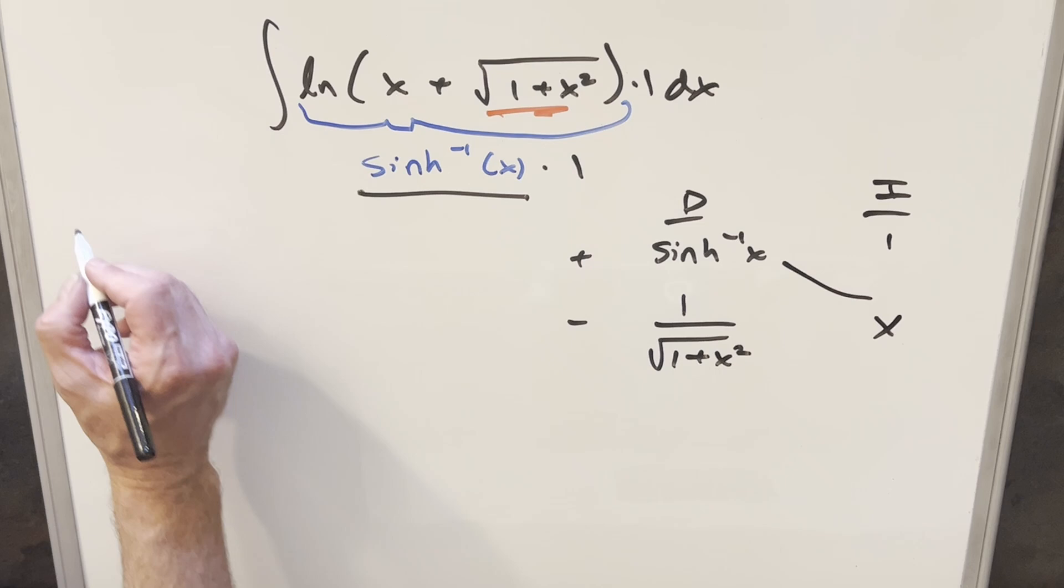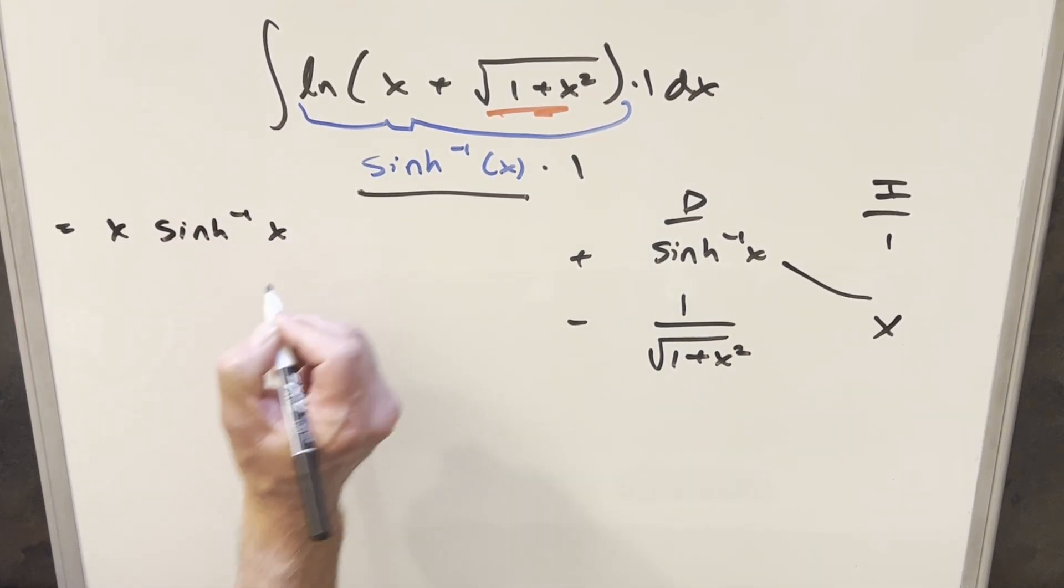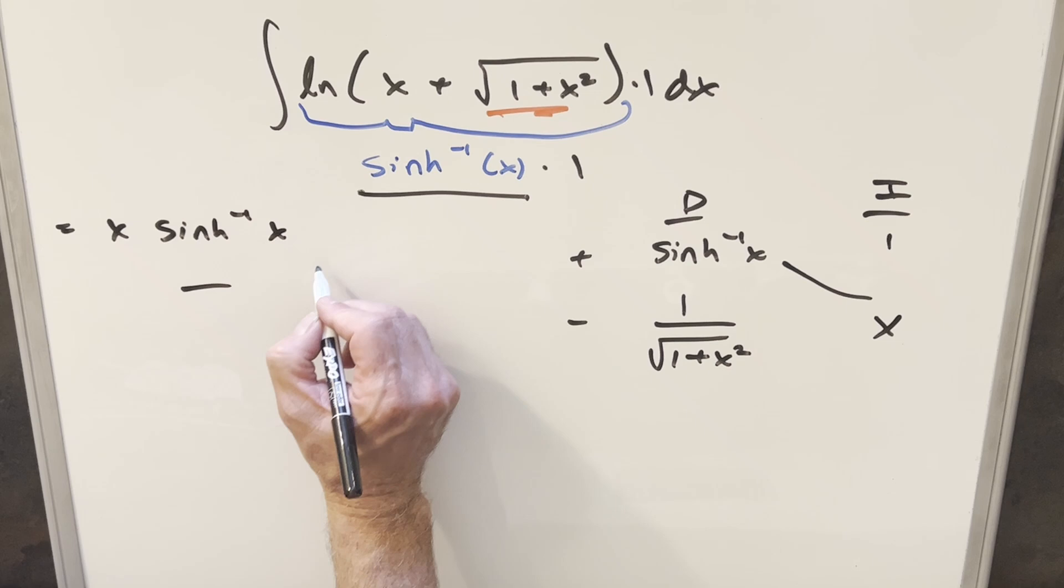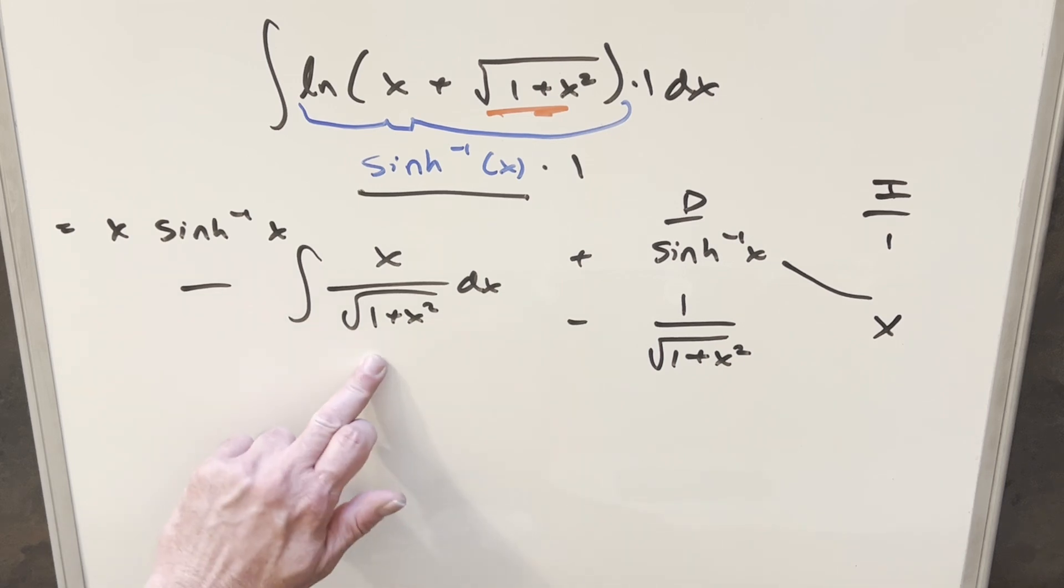So we have part of our solution right there on the diagonal, right? So we have x inverse sinh of x minus this thing, which is going to be the integral of x over square root 1 plus x squared dx. And this is something we come across a lot where we can just do a u substitution.